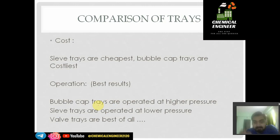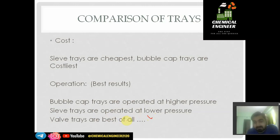For best result operation: bubble cap trays are best operated at high pressure, while sieve trays are generally operated at lower pressure — why sieve trays are operated at lower pressure is a question for you to think about. Valve trays are the best because they can operate at any pressure, opening or closing the valve based on the vapor pressure. Why bubble cap trays are operated at high pressure is another question you can research on Google.